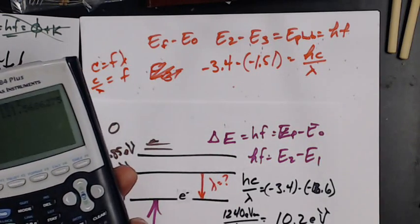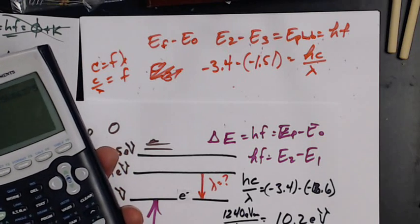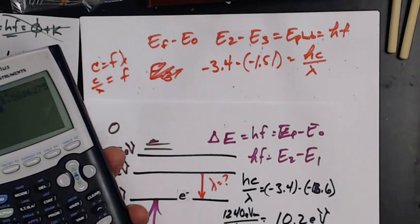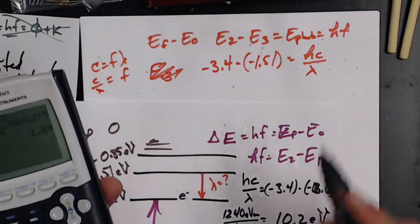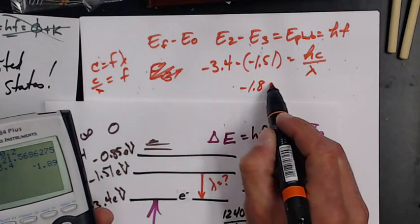I've got to use my calculator again. 1.51 minus 3.4 equals negative 1.89.